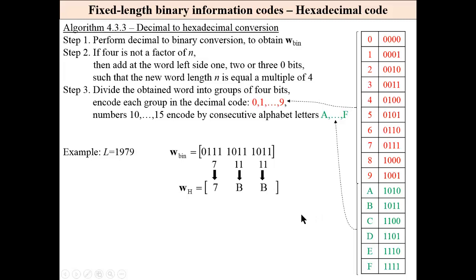That way we have encoded in hexadecimal the decimal number 1979. That's all regarding fixed length binary information codes.